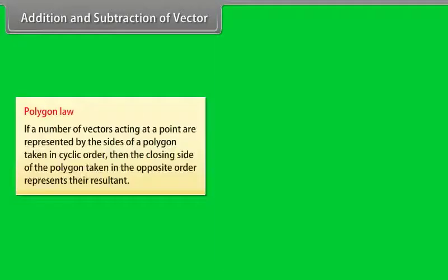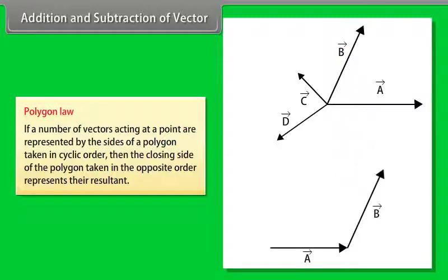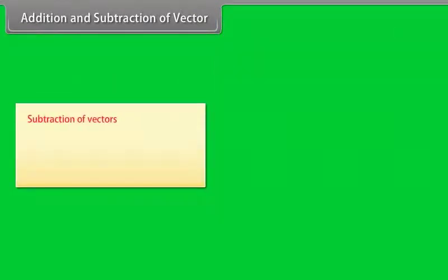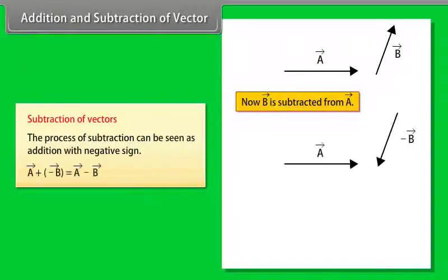C. Polygon law: If a number of vectors acting at a point are represented by the sides of a polygon taken in cyclic order, then the closing side of the polygon taken in the opposite order represents their resultant. Subtraction of vectors: The process of subtraction can be seen as addition with negative sign.